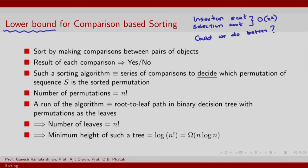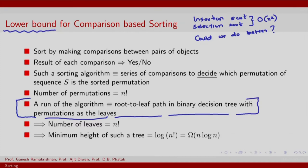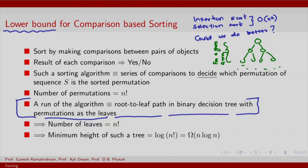The key observation will be as follows. We will try and view each of these algorithms, or any other algorithm we might come up with in the future based on comparison, as a run of an algorithm on a large binary decision tree. We are saying that we have some large binary decision tree, and each of the runs of these algorithms would correspond to a path in this decision tree.